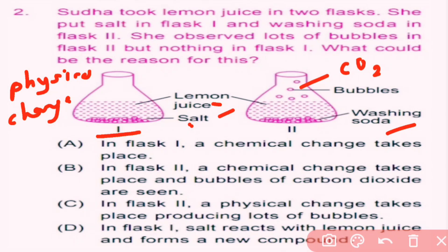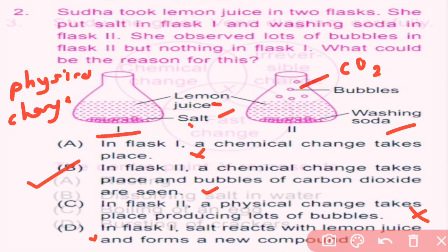It is a chemical reaction. Option A — in flask one a chemical change takes place — is incorrect. Option B — in flask two a chemical change takes place and bubbles of carbon dioxide are seen — is correct. Option C — in flask two a physical change takes place producing lots of bubbles — is incorrect. Option D — in flask one salt reacts with lemon juice to form a new compound — is also incorrect. So only option B is the correct answer.